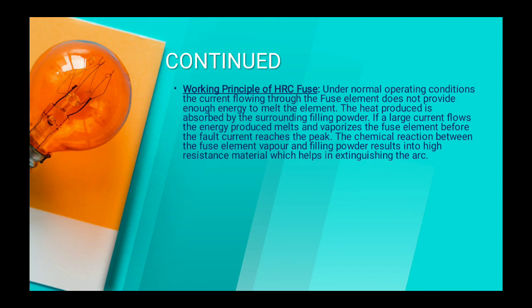Now the working principle of HRC fuse. Under normal operating conditions, the current flowing through the fuse element does not provide enough energy to melt the element. The heat produced is absorbed by the surrounding filling powder. If a large current flows, the energy produced melts and vaporizes the fuse element. Before the fault current reaches the peak, the chemical reaction between the fuse element vapors and filling powder results in high resistance material which helps in extinguishing the arc.